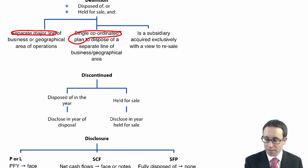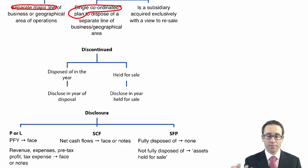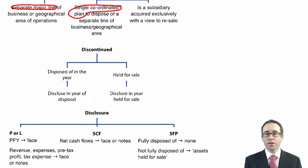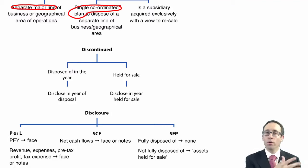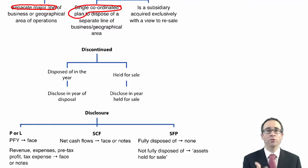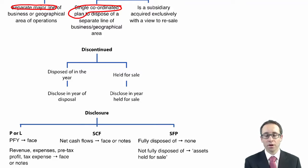When does the operation become discontinued? If it's disposed of in the year, you will obviously disclose it as a discontinued operation in that year. But we're trying to encourage earlier disclosure. So before the actual disposal takes place, you may have decided to hold that operation for sale. In one accounting period it could be disclosed as a discontinued operation because it is held for sale, and then in the subsequent accounting period, when it is disposed of, it will also be separately disclosed as a discontinued operation. Under the old rules, we only ever used to show a discontinued operation when it had physically been disposed of or closed down. Now, we're encouraging earlier disclosure, and that is achieved by classifying that discontinued operation as being held for sale using the criteria from the previous video.